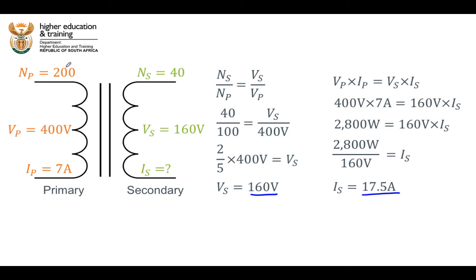This was a step-down transformer — there are more turns in the primary than the secondary coil, so the voltage across the primary coil is greater than the voltage across the secondary coil. But if we assume no power losses and that energy can't be created or destroyed, then we expect more current to flow through the secondary coil than the primary coil. And that is exactly what we find: when voltage is lower in the secondary coil, the current is higher through the secondary coil than through the primary coil.